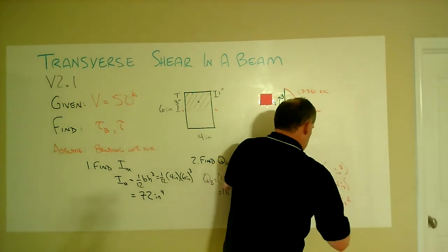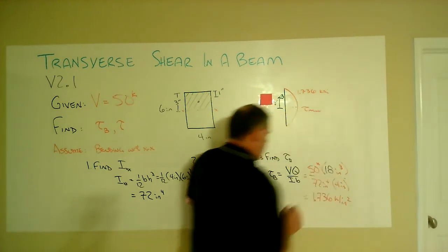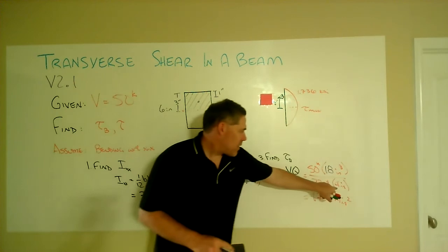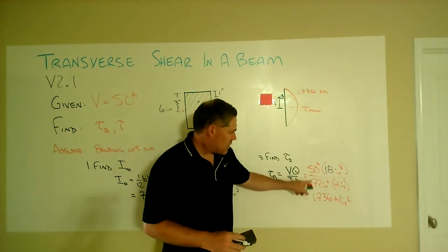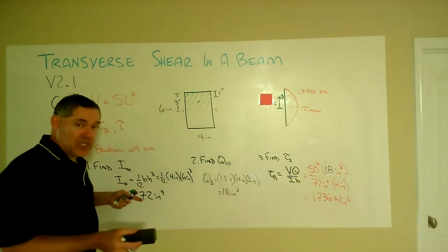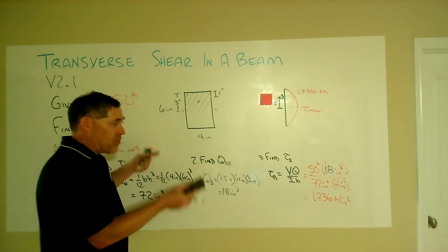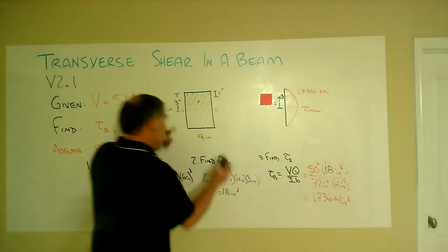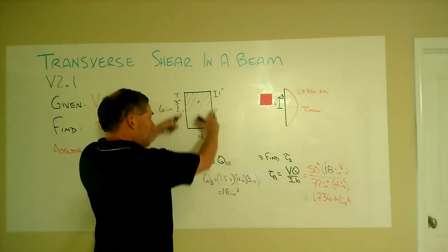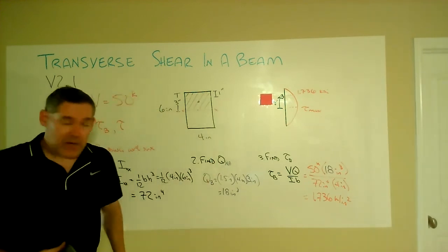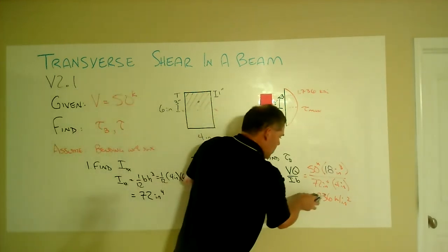So that will change that number right there. Now the four doesn't change, the 72 doesn't change, the 50 doesn't change. It's the same shear, same second moment of area for the whole thing. The four inches doesn't change because we're four inches wide across the entire height of this thing.